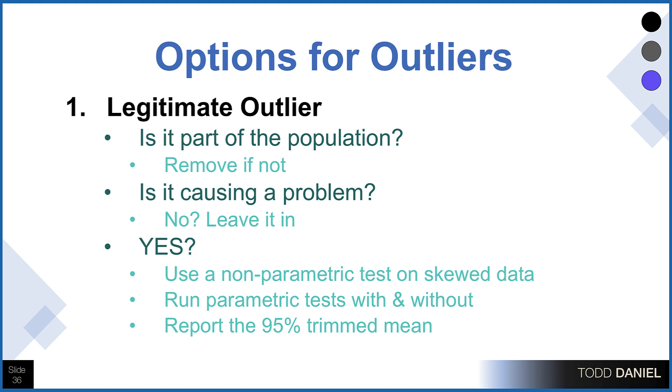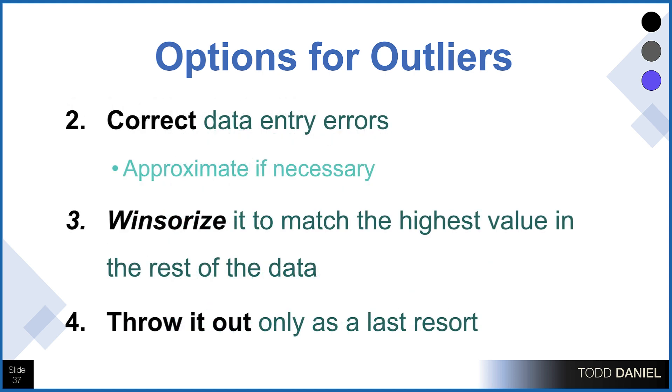Or we could use a 95% trimmed mean when we report the descriptive statistics for this part of the data set. A second option to correct for outliers is if the score is not a legitimate score — it's a data entry error — we could simply correct that error: change the 66 to a 6 because that is what the score should have been. If you can't quite tell what the score should have been, sometimes you can approximate. So if the score was a 45, it was either a 4 or a 5, and you might approximate by using a 4.5, something between the two values it could have been.